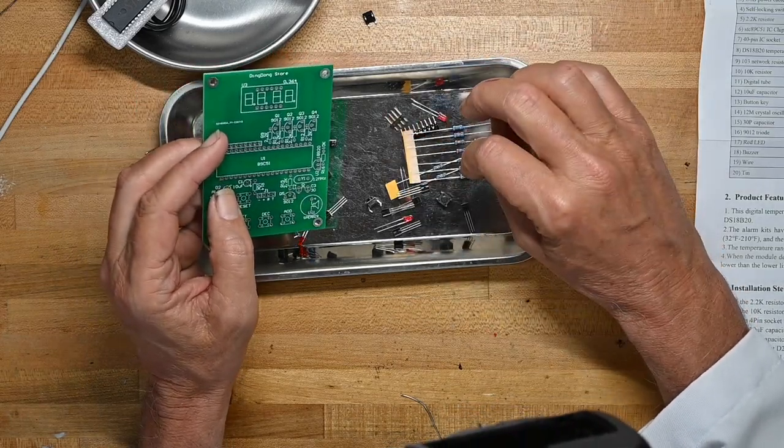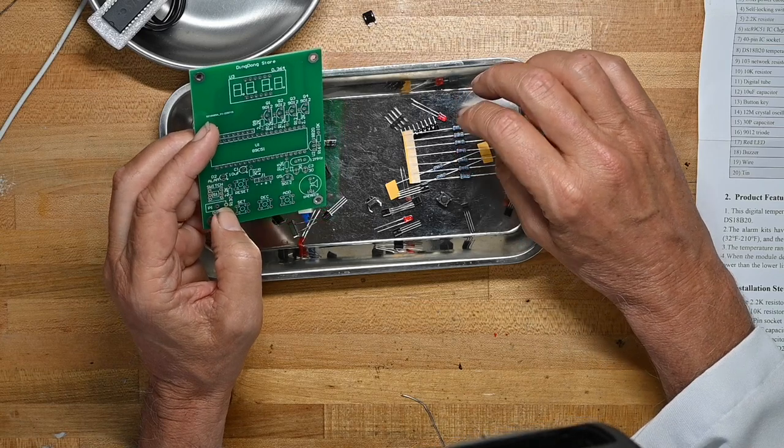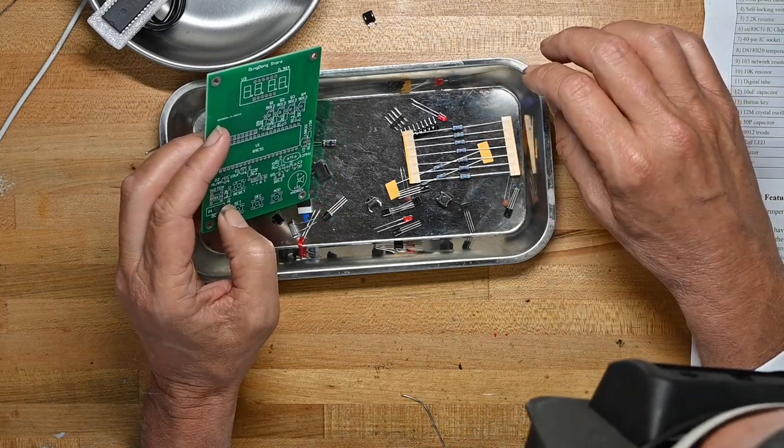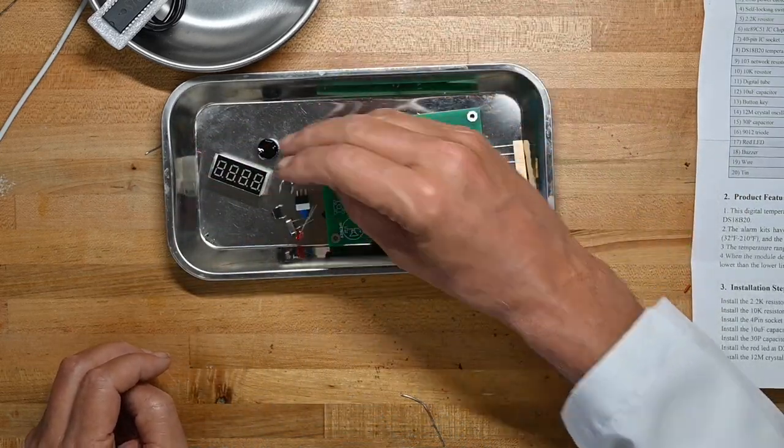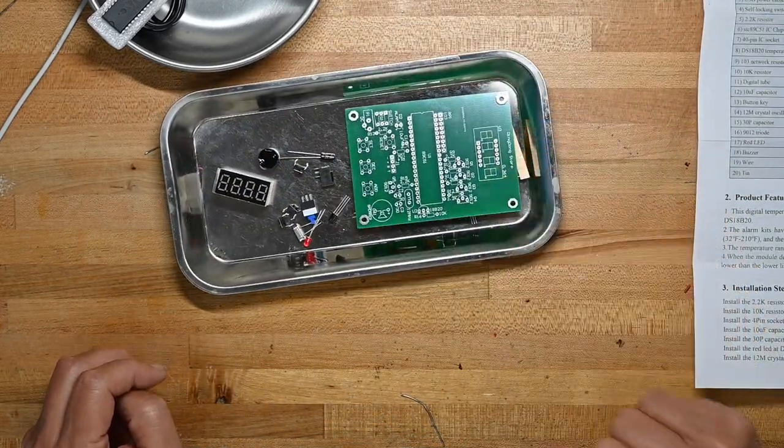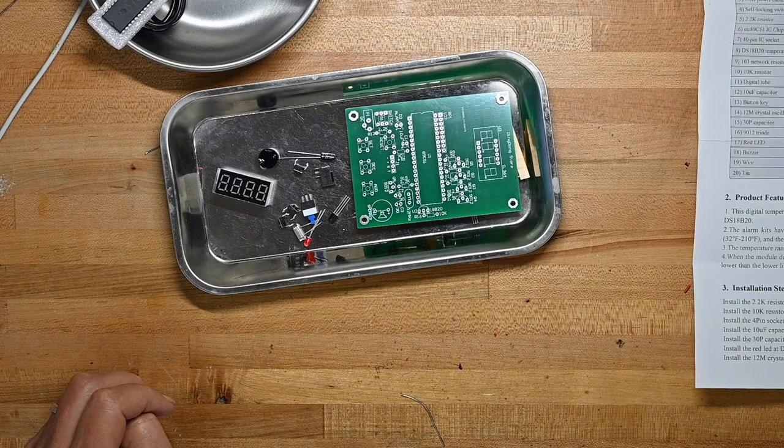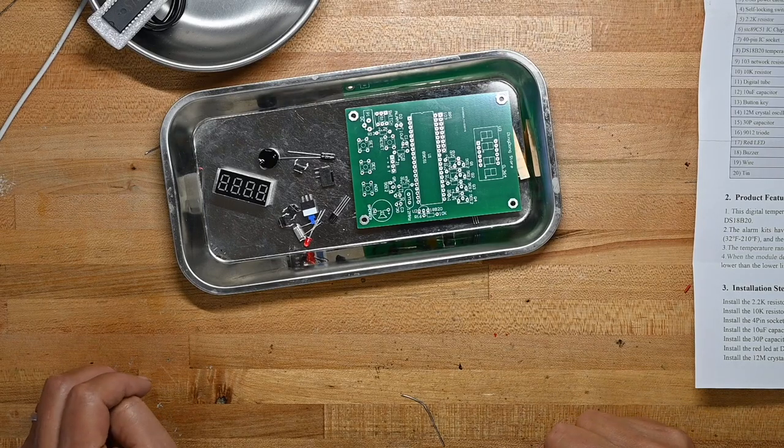So it's pretty straightforward. Some smoothing caps or decoupling caps, whatever you want to call them. And the stuff. So it looks pretty straightforward. Put that switch back in there. So let me get the soldering iron heated up and we'll put this thing together.